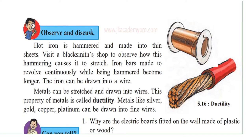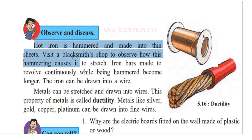Observe and discuss. Hot iron is hammered and made into thin sheets. We already saw how hammering the nail made it into a thin sheet. When iron is heated, it becomes softer and easier to shape into sheets. Hot iron is hammered and made into thin sheets.